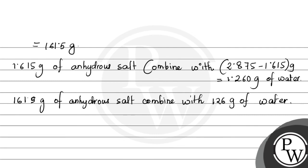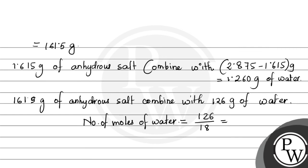From this, we will find out the number of moles of water that combine with the anhydrous salt. We know that number of moles equals mass divided by molar mass of the compound. So it will be 126 divided by 18, which is the molecular mass of water. It will be equal to 7 moles.